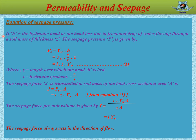Equation of seepage pressure: if S is the hydraulic head or the head loss due to frictional drag of water flowing through a soil mass of thickness Z, the seepage pressure PS is given by PS = γW × S. We know water pressure P = γS. To convert S into hydraulic gradient I, Z has been divided and multiplied with the equation so that the value remains the same. If S/Z = hydraulic gradient I, so we can write PS = I × Z × γW, where Z equals the length over which the head S is lost, and I equals the hydraulic gradient equal to S/Z.